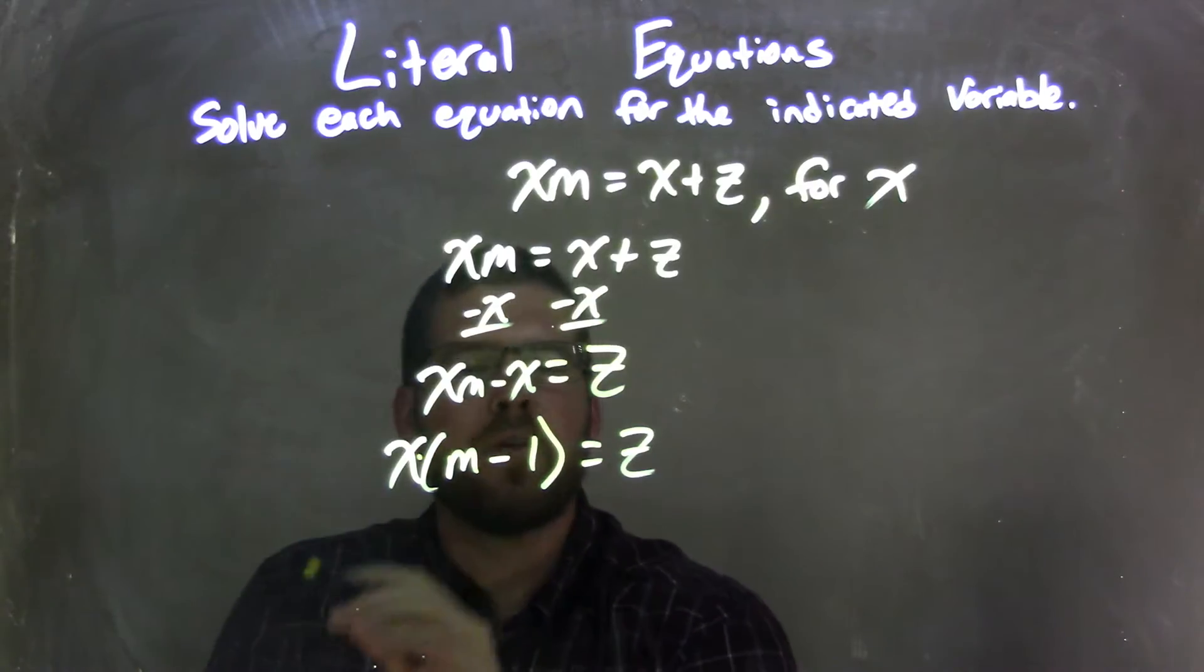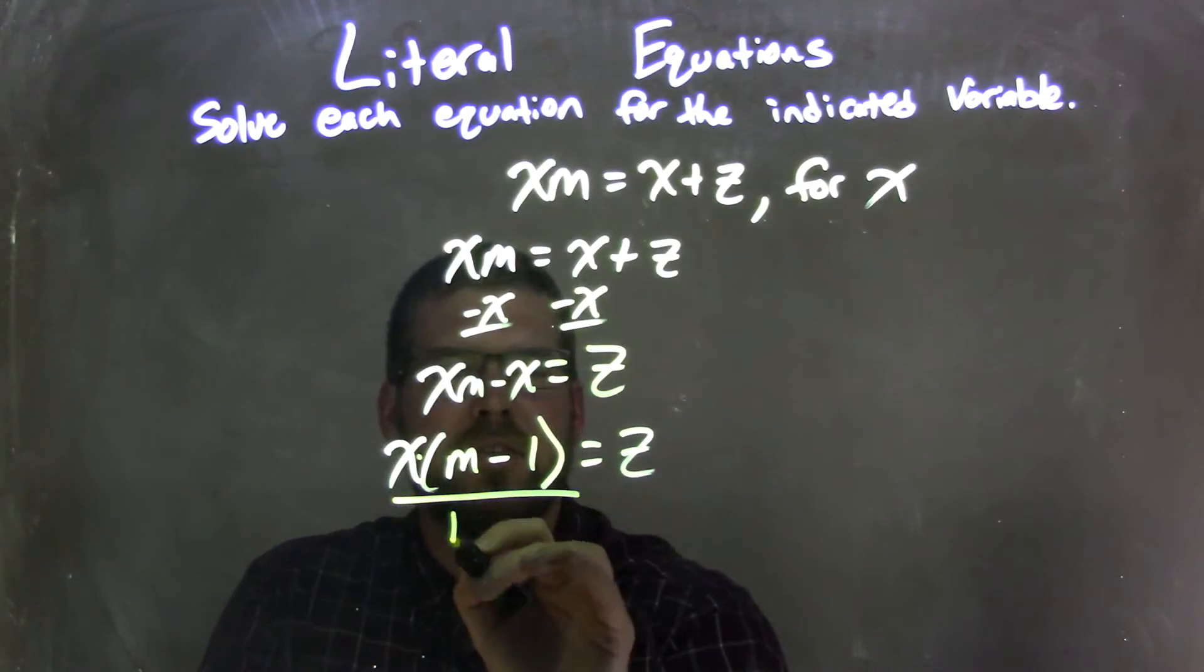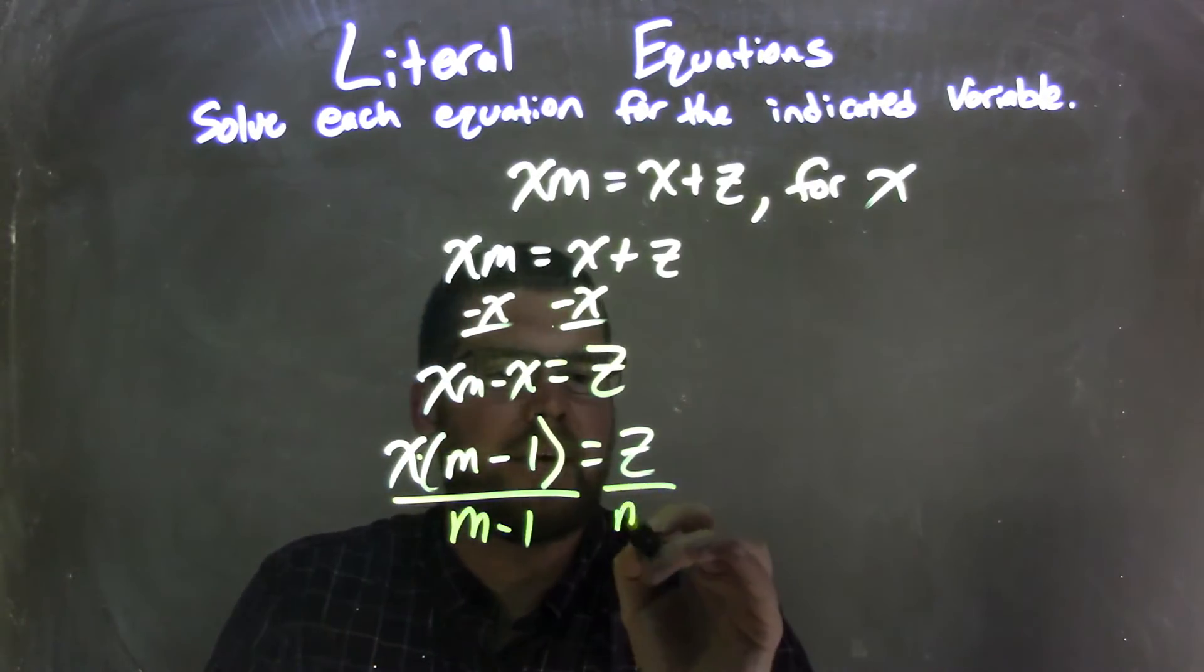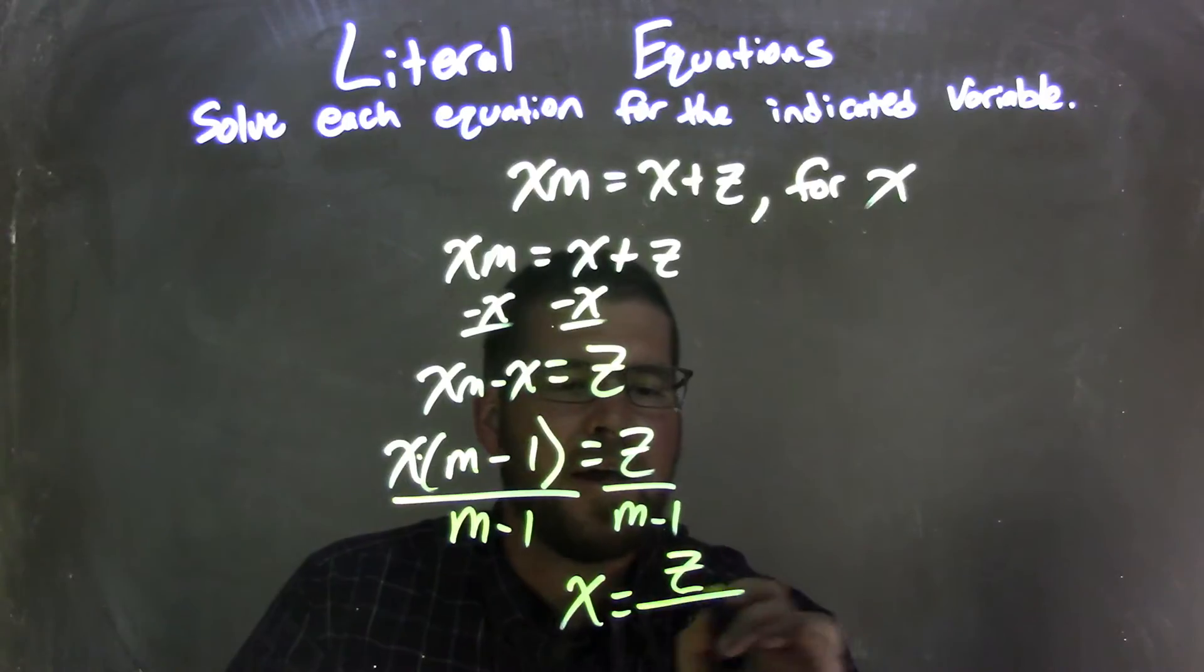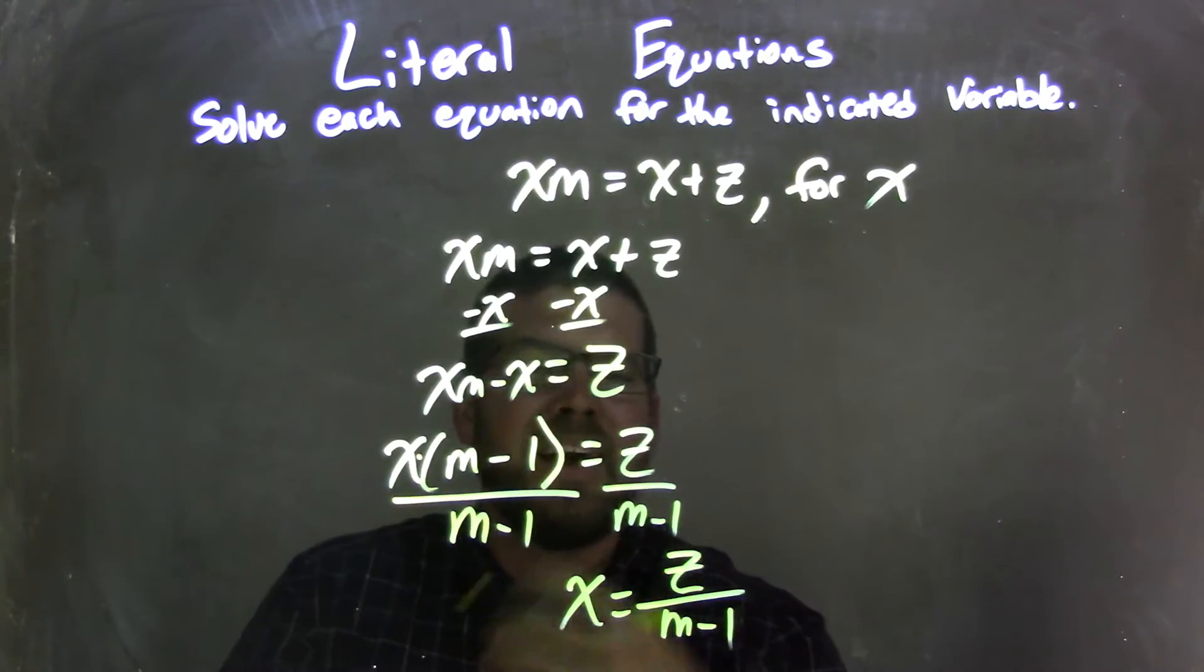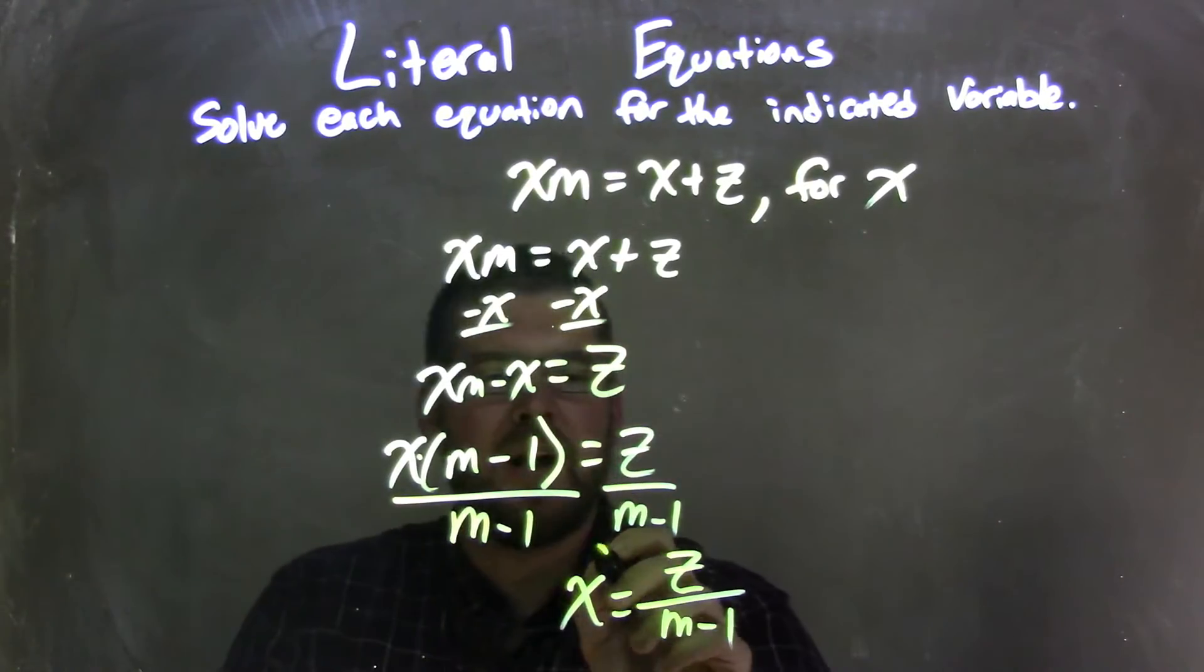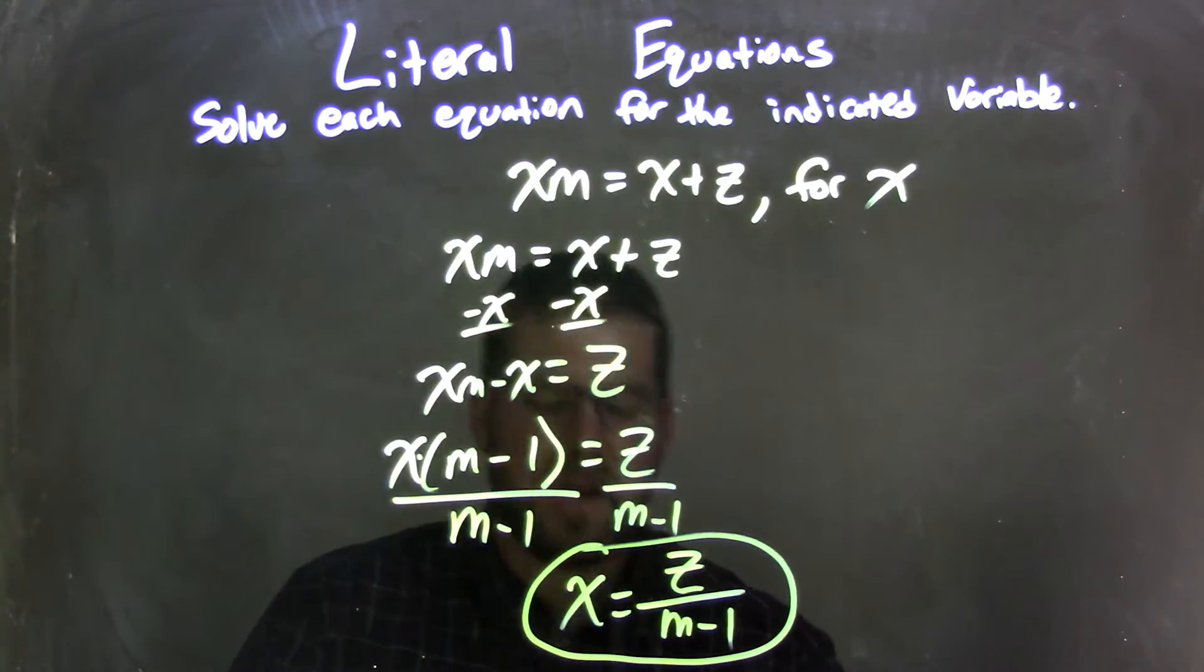What that allows me to do here is there's multiplication going on, opposite multiplication is division. So if I subtract an m minus 1 to both sides, that's going to leave me with x by itself here on the left, and a z over an m minus 1 on the right. And now x is all by itself, it's isolated, and so I have my final answer.